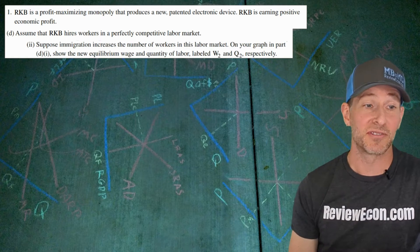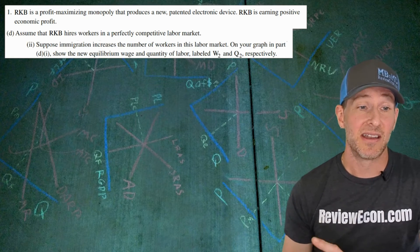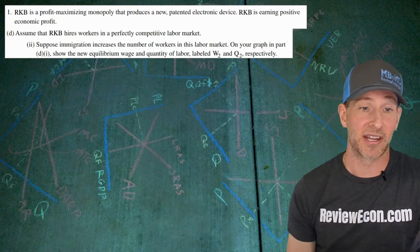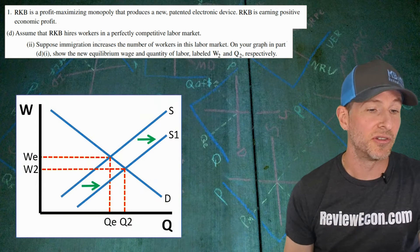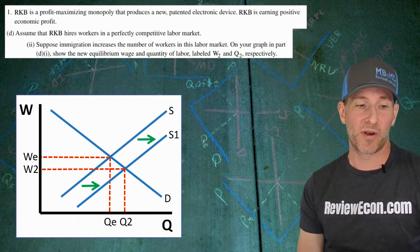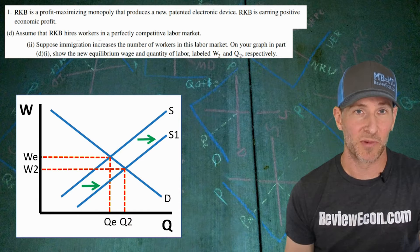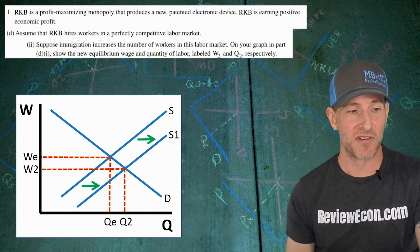Moving on to the next part. We're going to suppose that immigration increases the number of workers in this labor market. Number of workers is the supply. So we're going to increase the supply and show the new lower equilibrium wage and higher equilibrium quantity hired.